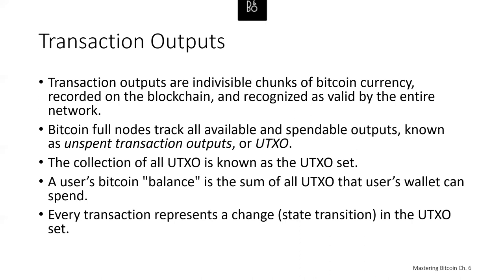When we say a user's wallet has received Bitcoin, what we mean is the wallet has detected on the blockchain a UTXO that can be spent with one of the keys it controls. The user's Bitcoin balance is the sum of all UTXOs that wallet can spend, which could be scattered among hundreds of transactions and blocks. The concept of balance is created by the wallet, which scans the blockchain and aggregates UTXO values. Most wallets maintain a database to store a quick reference of all spendable UTXOs.